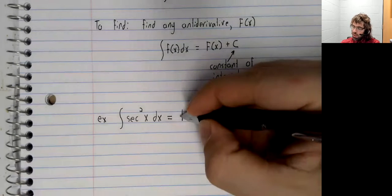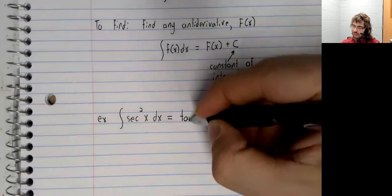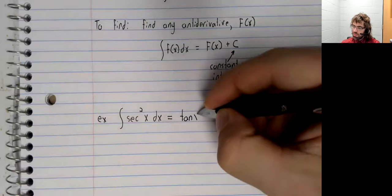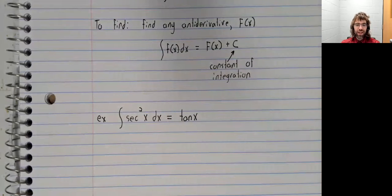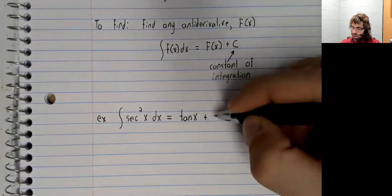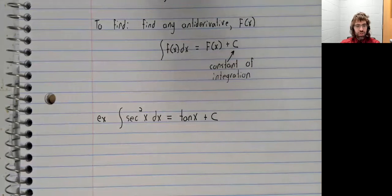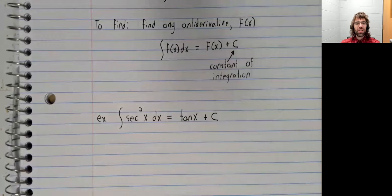We come up with tangent. So we found an antiderivative, and then all we have to do is add that constant of integration to get the indefinite integral.